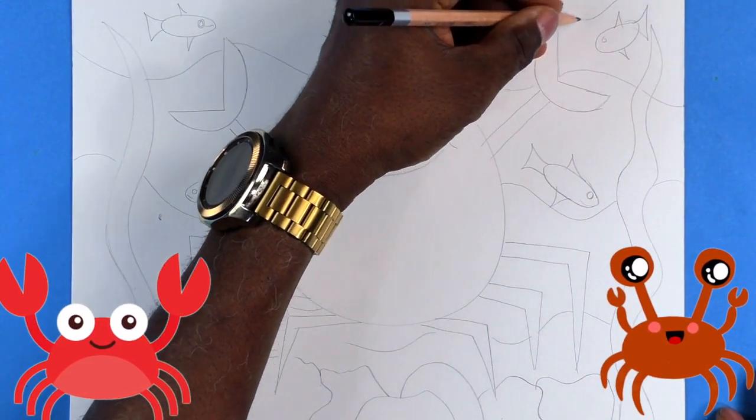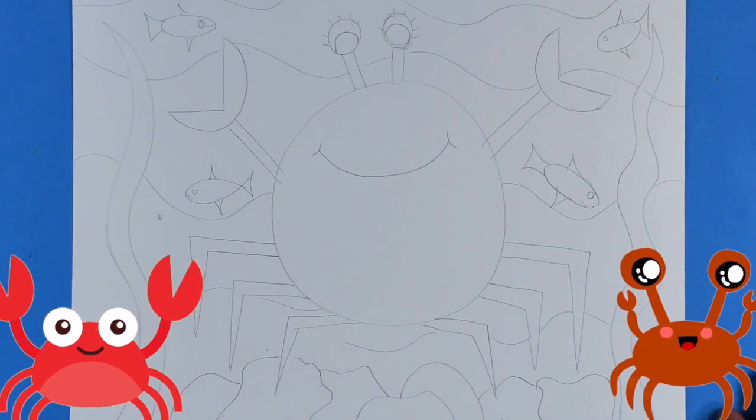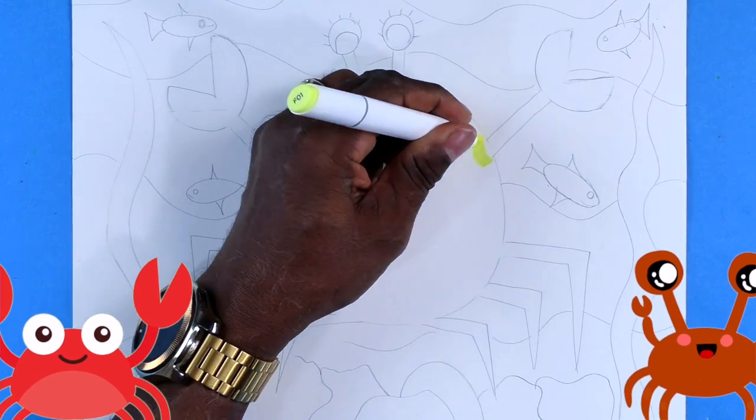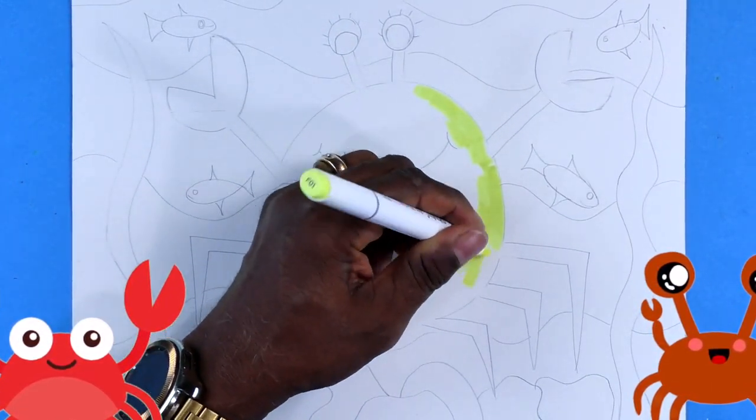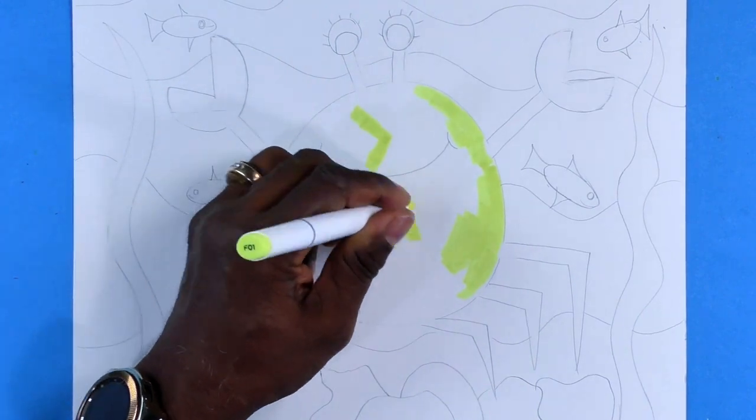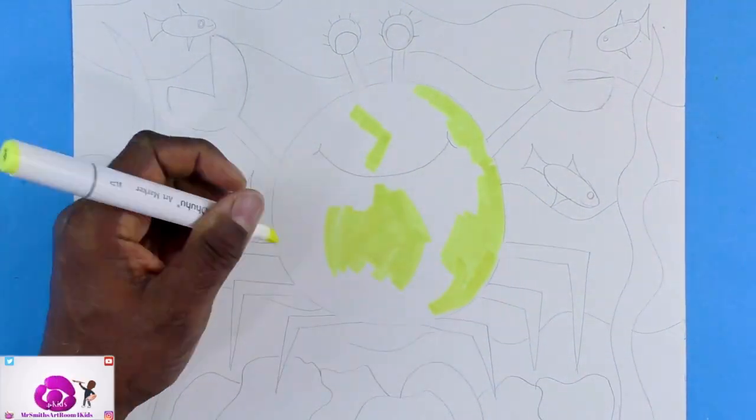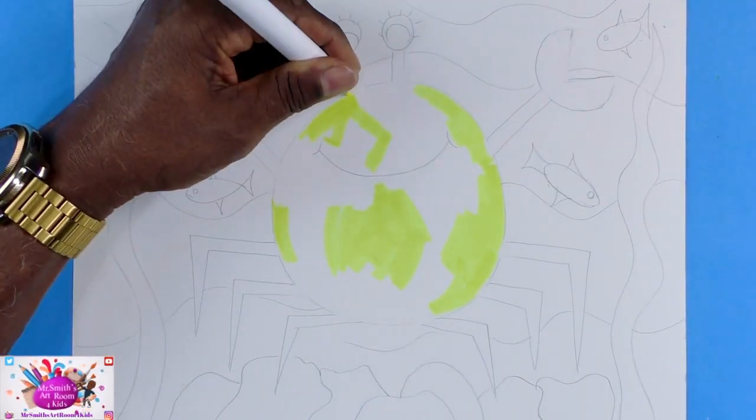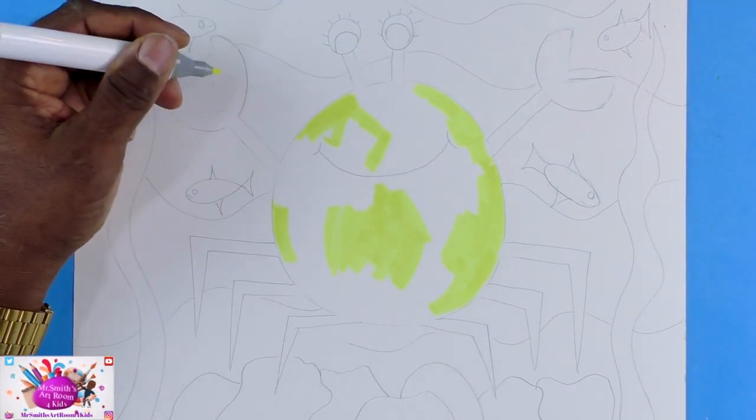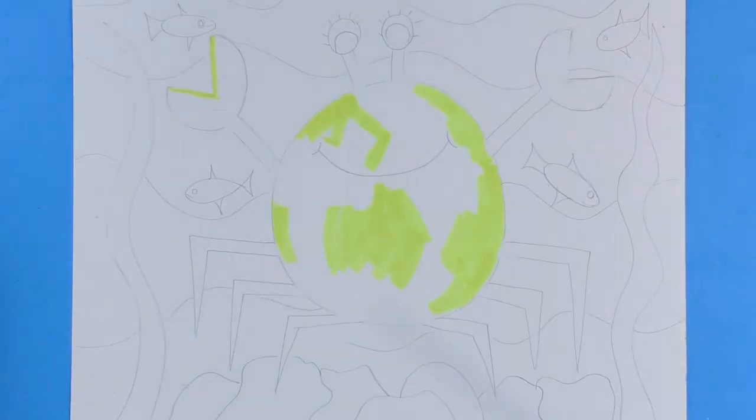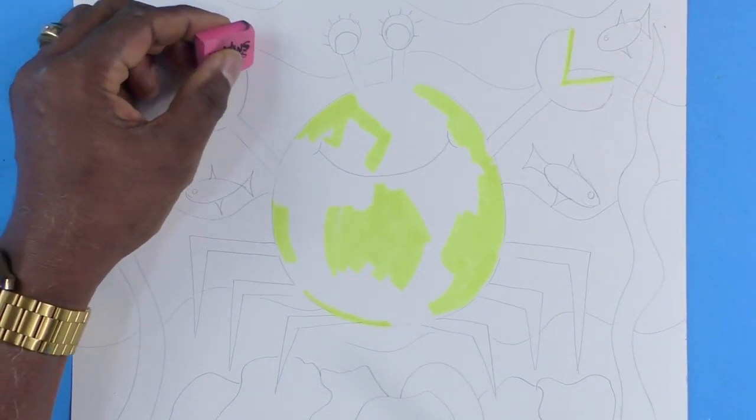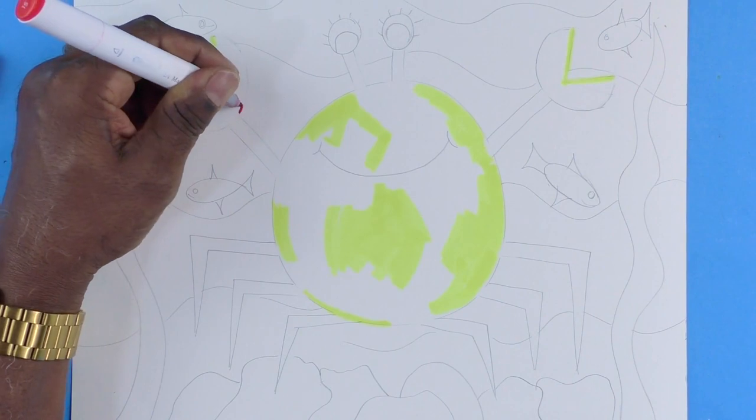And I think it will be time to start adding color. Now you're probably saying, wow, why are you putting down that lime yellow, Mr. Smith? Well, it's an under color. I like to sometimes put certain colors down and then I'm going to mix them. And by mixing and blending colors, it will make my colors even richer.